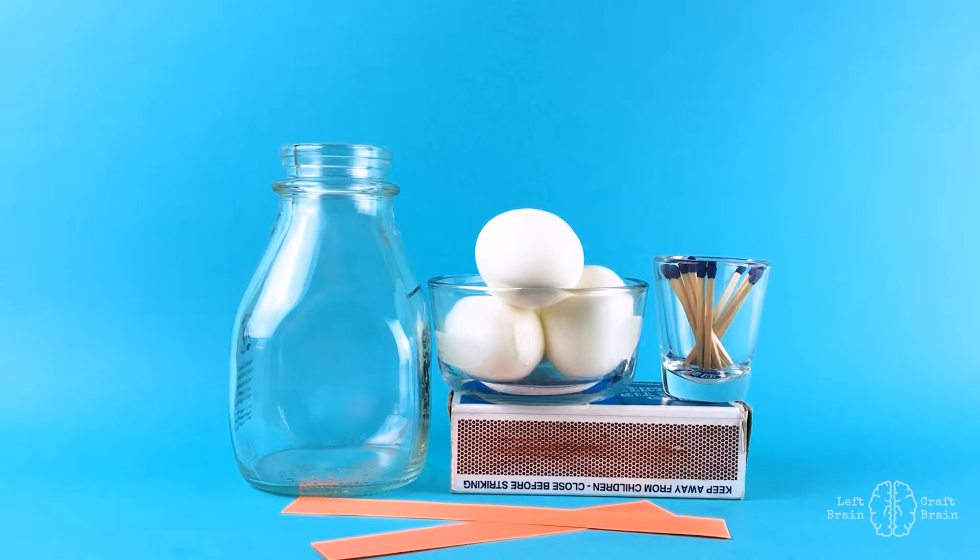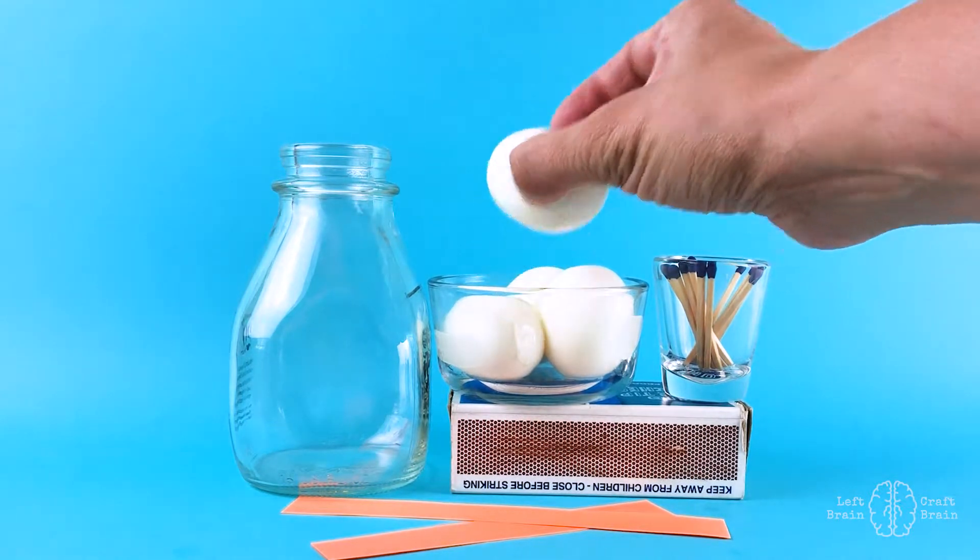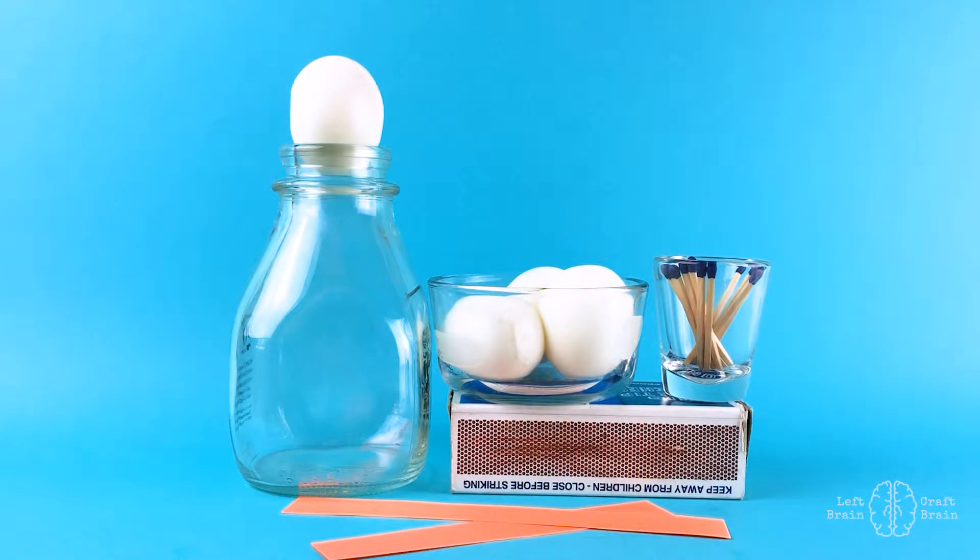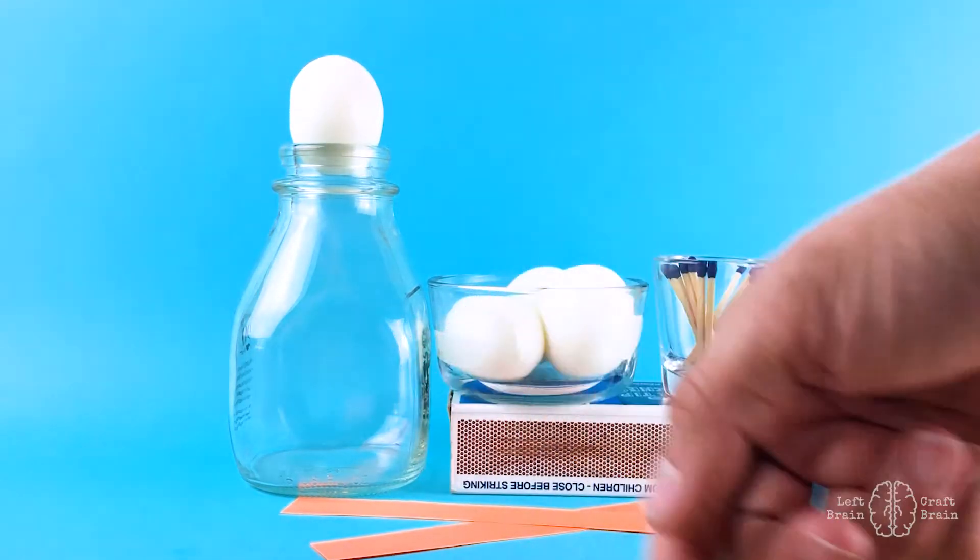We're doing a classic science experiment, the egg in a bottle trick. You might have seen it before, but look at this. It's a hard-boiled egg. We want to stick that inside that bottle. Does it look like it can go? No. Add a little science and that little egg will be right inside this bottle.